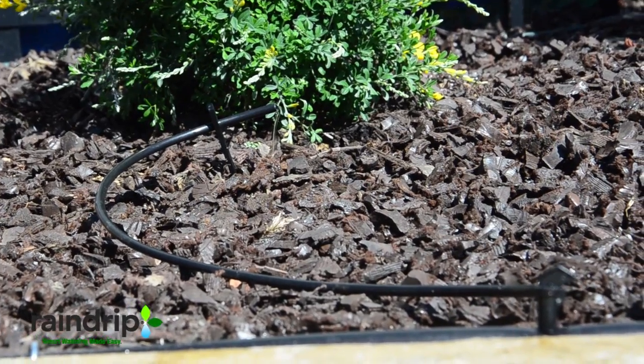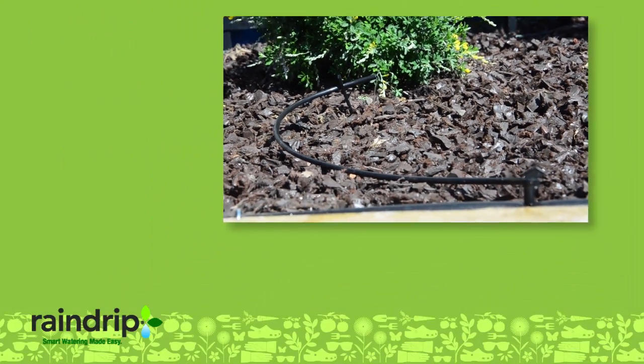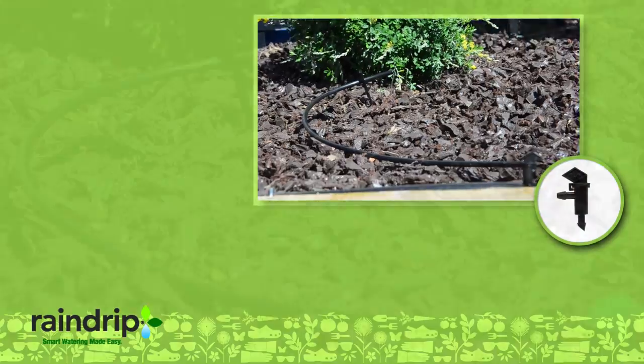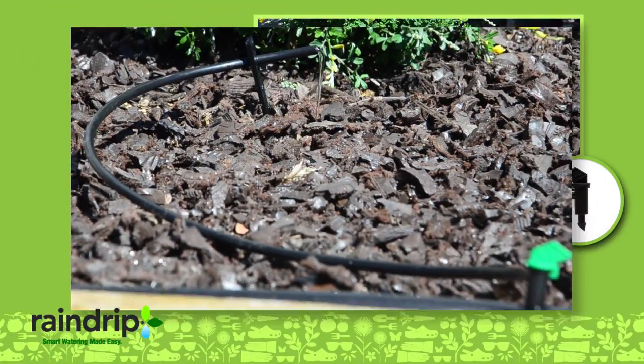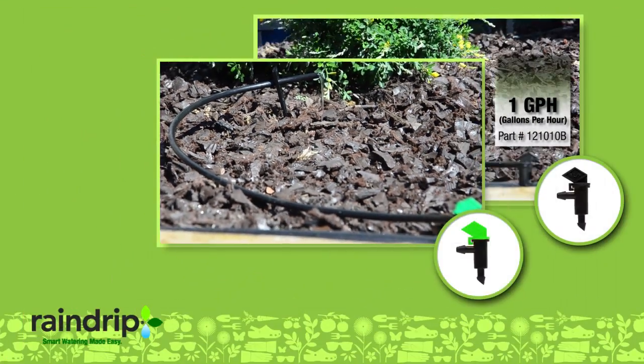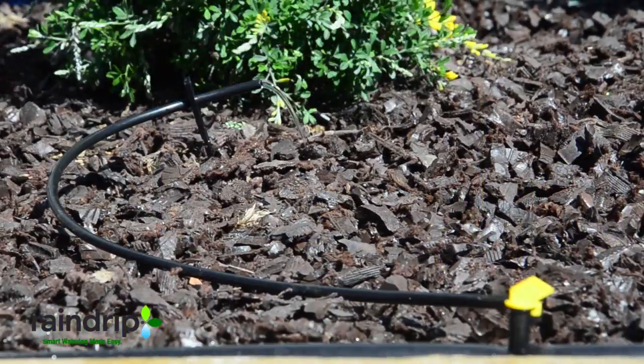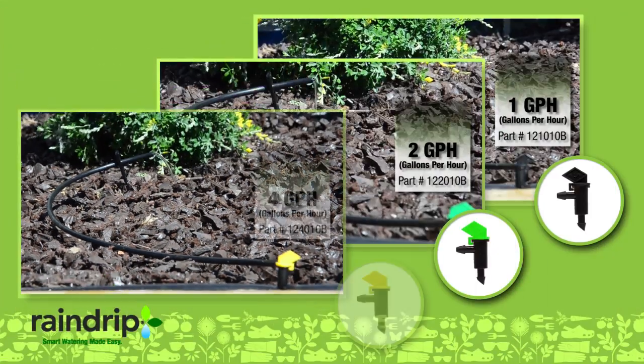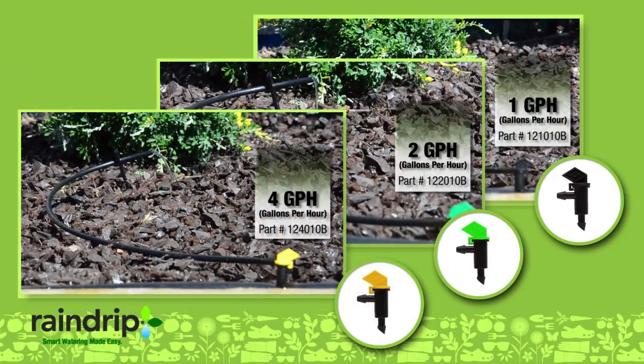Flag drippers are color-coded: black for one gallon per hour, green for two gallons per hour, and yellow for four gallons per hour.